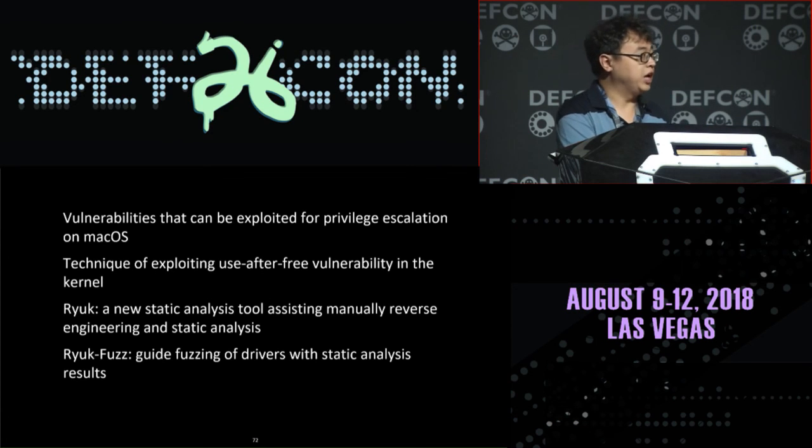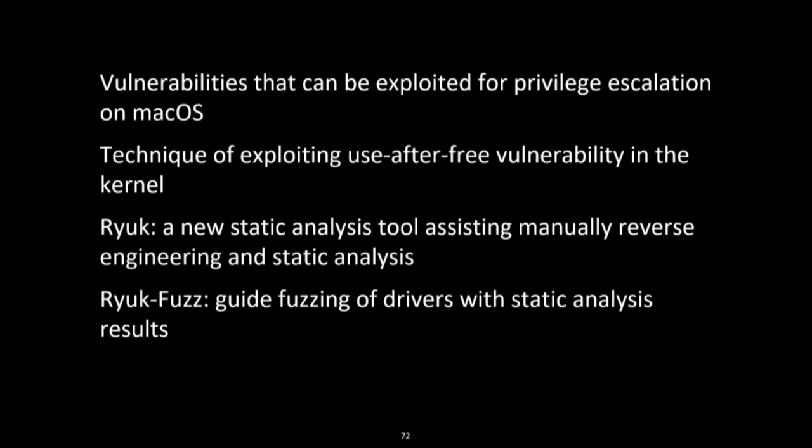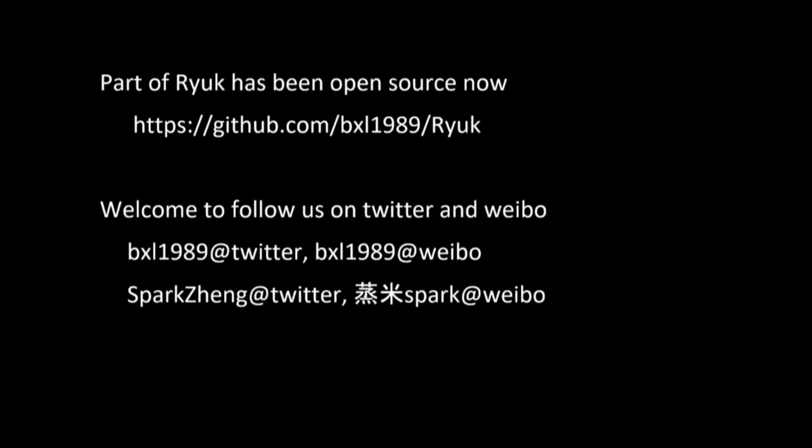In conclusion, in this talk we showed several vulnerabilities that can be exploited for privilege escalation on macOS, the technique of exploiting use-after-free vulnerabilities in the kernel, and the new static analysis tool RilK along with the use case RilKFuzz. Part of RilK has been open-sourced — you can fork or star it on GitHub. Follow us on Twitter and Weibo: BXL1989 and Spark Zheng. Thank you for your attention.